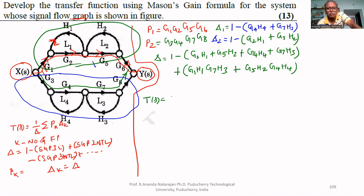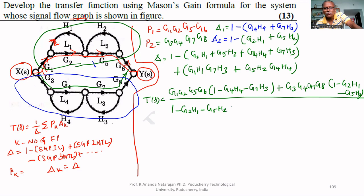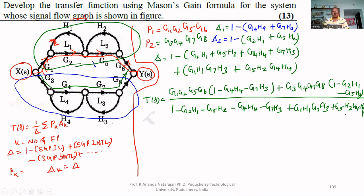Therefore, the transfer function T(s) = [g1·g2·g5·g6·(1 − g4·h4 − g7·h3) + g3·g4·g7·g8·(1 − g2·h1 − g5·h2)] divided by Δ, where Δ = 1 − g2·h1 − g5·h2 − g4·h4 − g7·h3 + g1·h1·g7·h3 + g5·h2·g4·h4. This is the transfer function for the given signal flow graph.